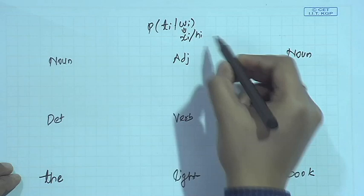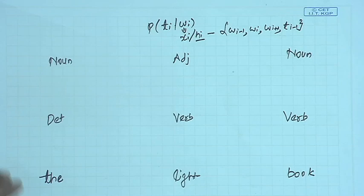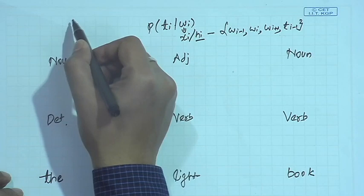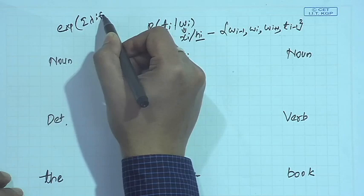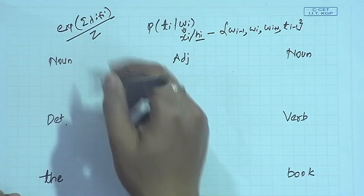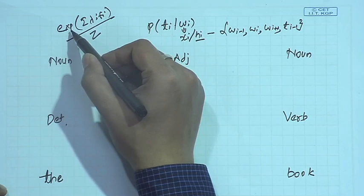The formulation is: probability of tag_i given the current history equals exponent of summation of lambda_i times f_i, divided by z, where z is the normalization constant so that all tag probabilities add up to 1. Let us try this when the tag is determiner and the word is 'the'. Since lambda_i equals 1 in this problem, it simplifies to exponent of the summation over f_i.